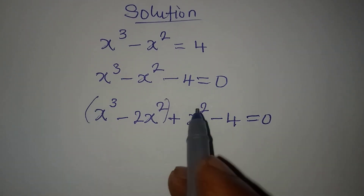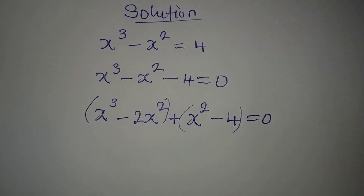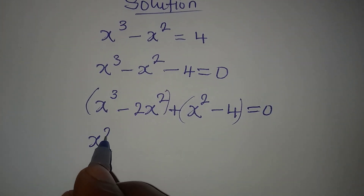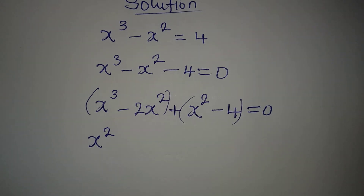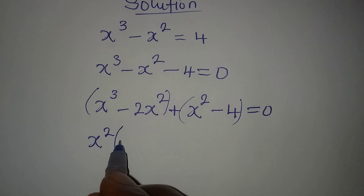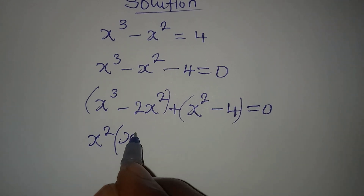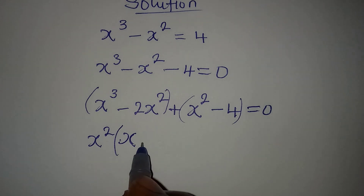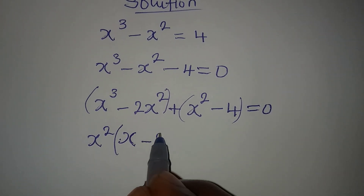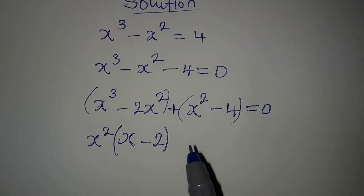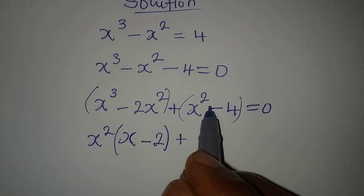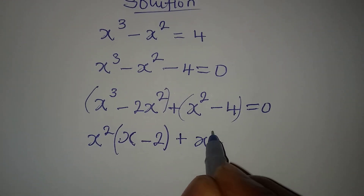We can group into 2 and factorize. When dealing with the first group, x to the power of 2 will be the common factor, giving us x squared times (x minus 2), because x squared has come out.